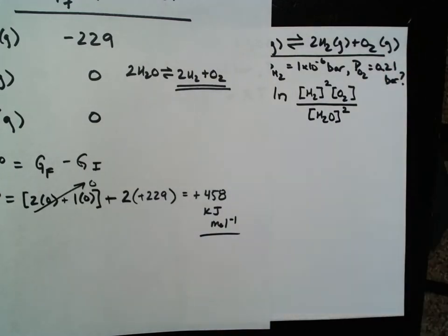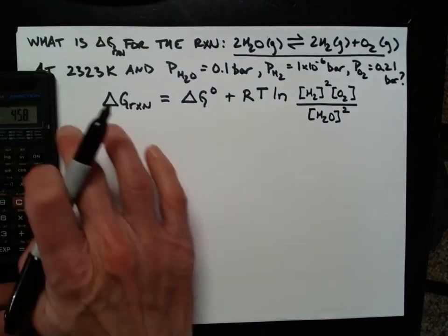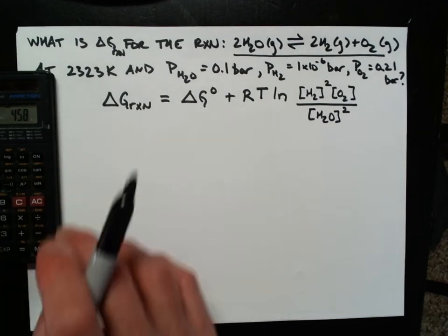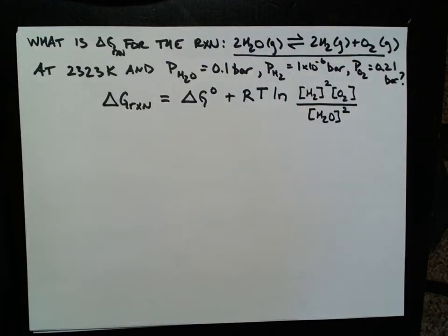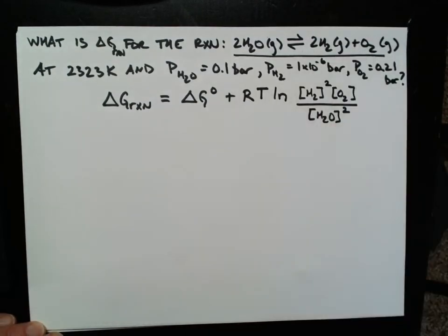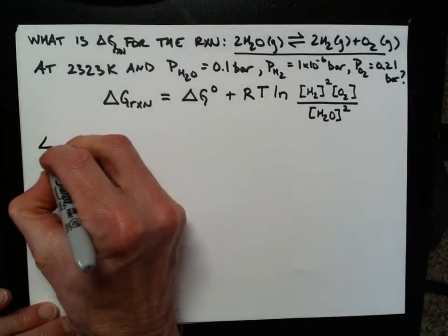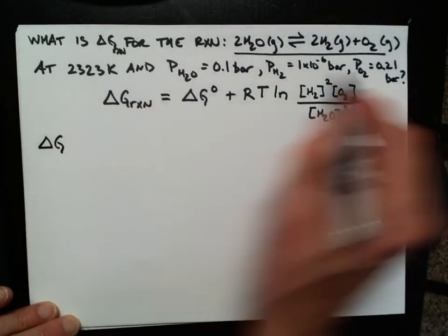But now we're also going to see if this reaction might be spontaneous under some non-standard conditions, the conditions we saw with a blowtorch. And we estimated what those conditions might be, and now let's just do a calculation and find out if it might be reasonable to assume that the water produced in the blowtorch might actually produce some hydrogen gas and oxygen gas. Okay, so the delta G for the reaction under these conditions,